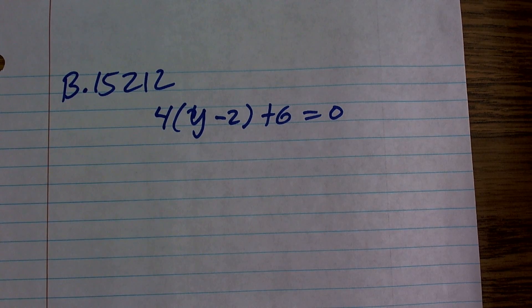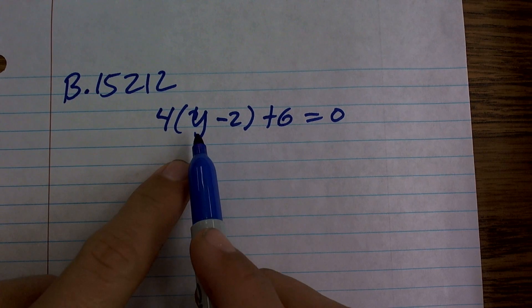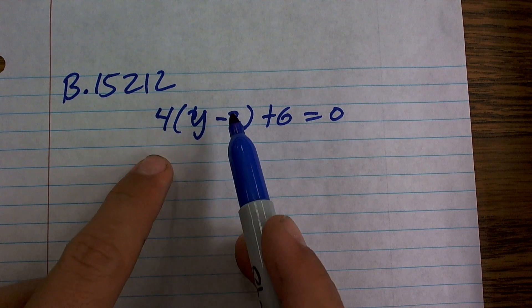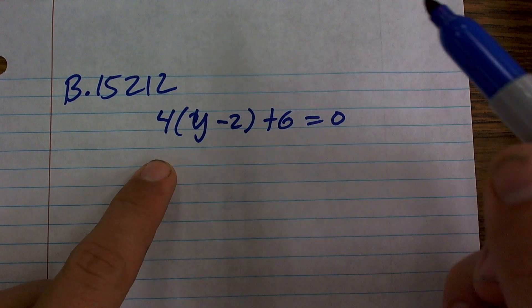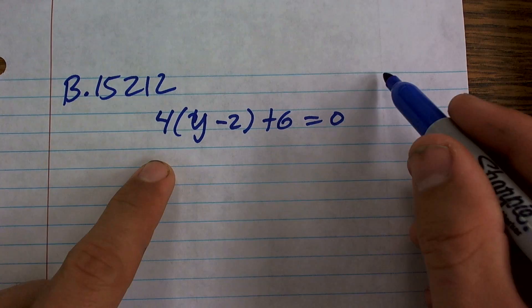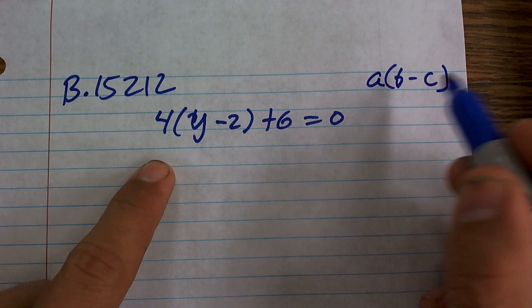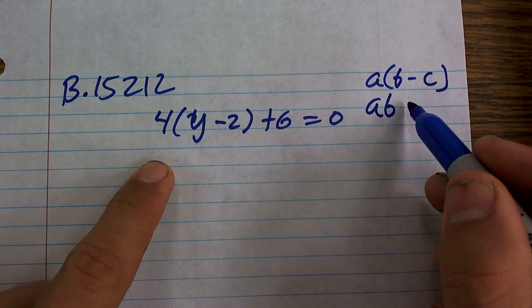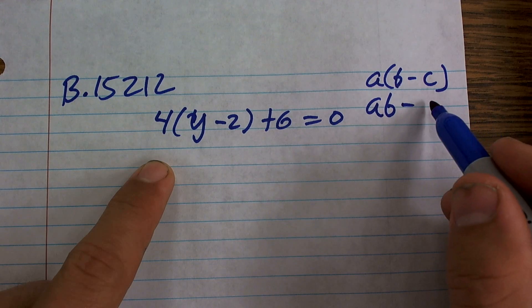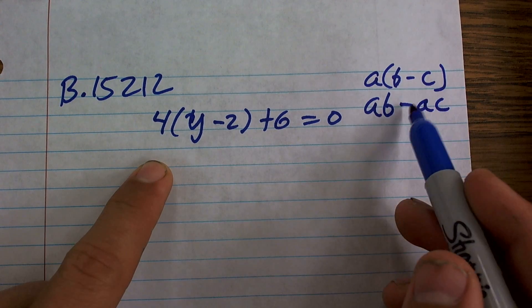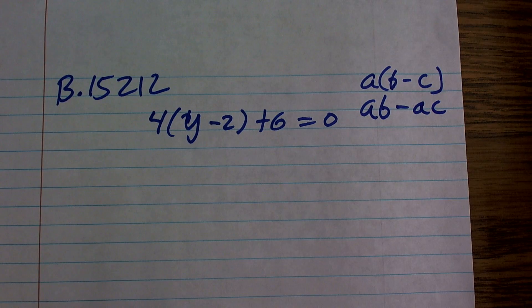So to do that, we need to get our variable by itself. Right now we have our variable inside these parentheses, and it's being multiplied by 4. That 4 is also multiplying by the negative 2, which is in our distributive property. And our distributive property, remember, just states that a times b minus c is equal to a times b minus a times c. Even though a is positive, since c is negative, you're going to have a negative product of a and c.